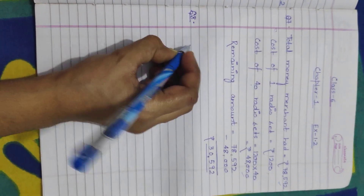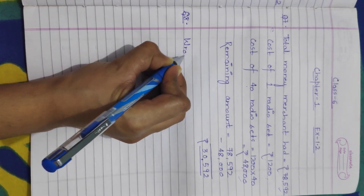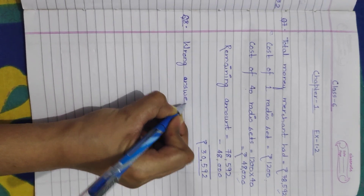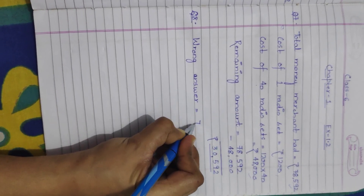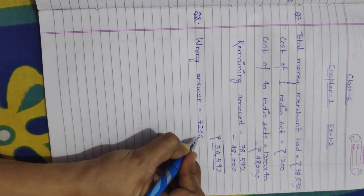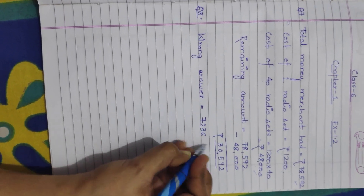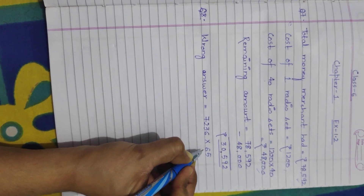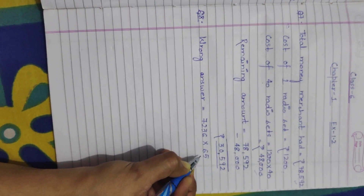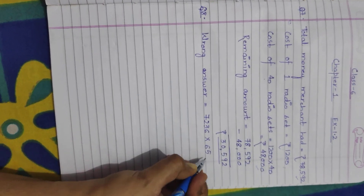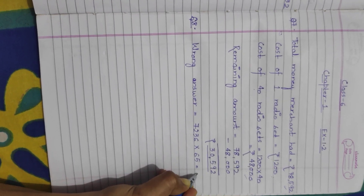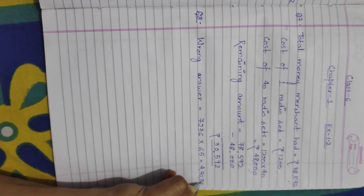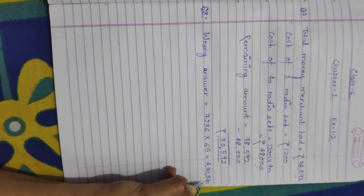First, let's calculate the wrong answer. The wrong answer will be 7,236 multiplied by 65, because the student mistakenly multiplied with 65 instead of 56. Multiplying them gives us 4,70,340. So, 4,70,340 is the wrong answer.